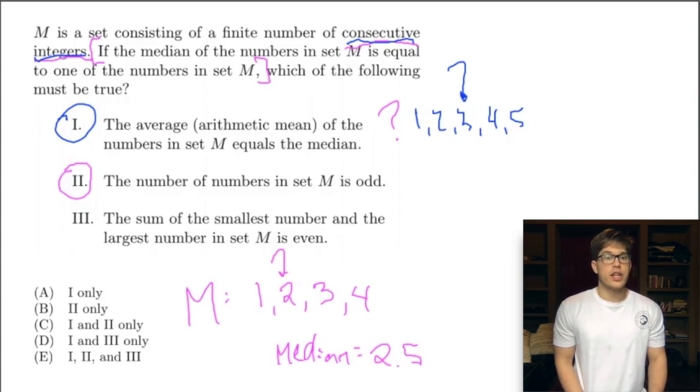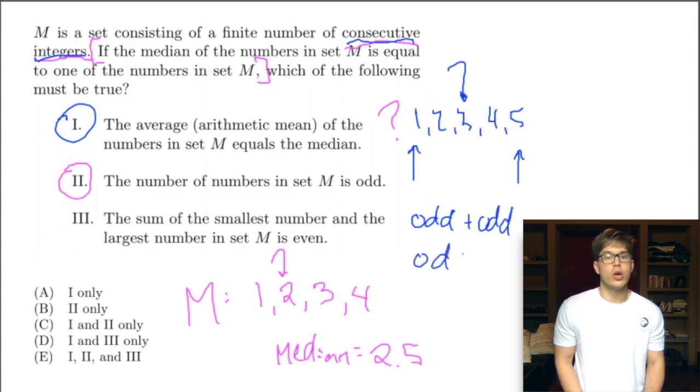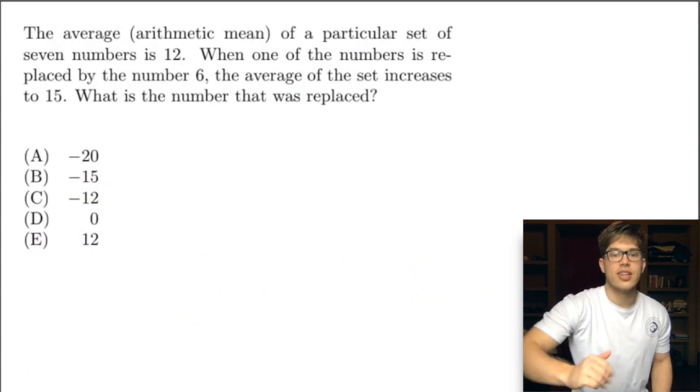Now let's think of three: the sum of the smallest number and the largest number is even. The smallest number will be our first and the largest will be our last. We have two possibilities. We can either have two odd numbers and an odd plus an odd is an odd, or we could have the other case, an even plus an even. And an even plus an even number is an even. So all three of these statements, one, two, and three are true. So this answer is E.